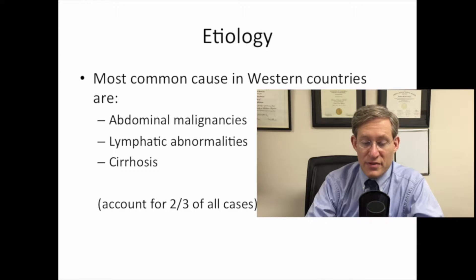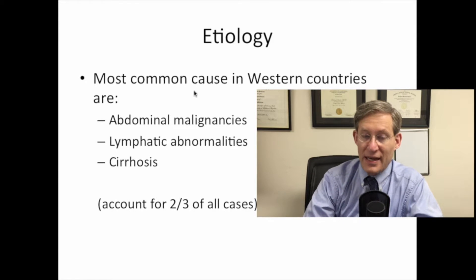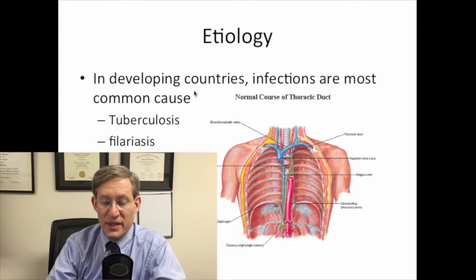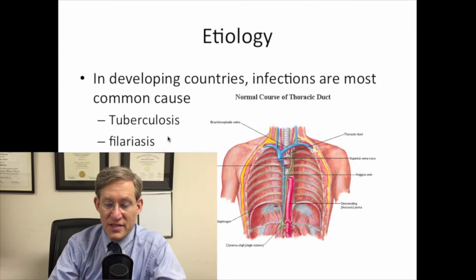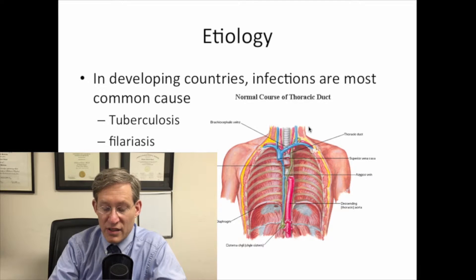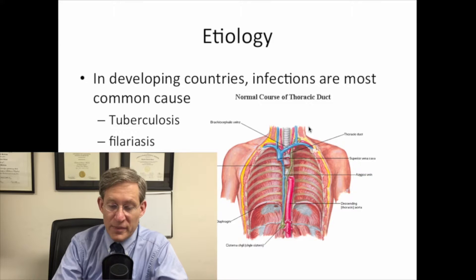In Western countries, the most common causes are abdominal malignancies, lymphatic abnormalities, and cirrhosis. In developing countries, tuberculosis and filariasis are important infectious causes. I've included another picture here showing the course of the thoracic duct in the body to help you understand the underlying anatomy.